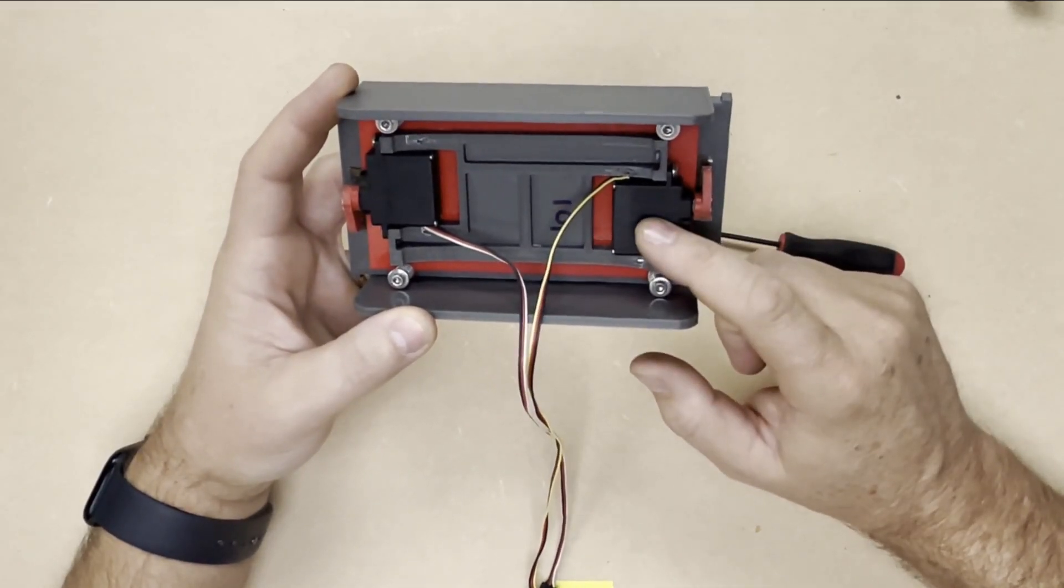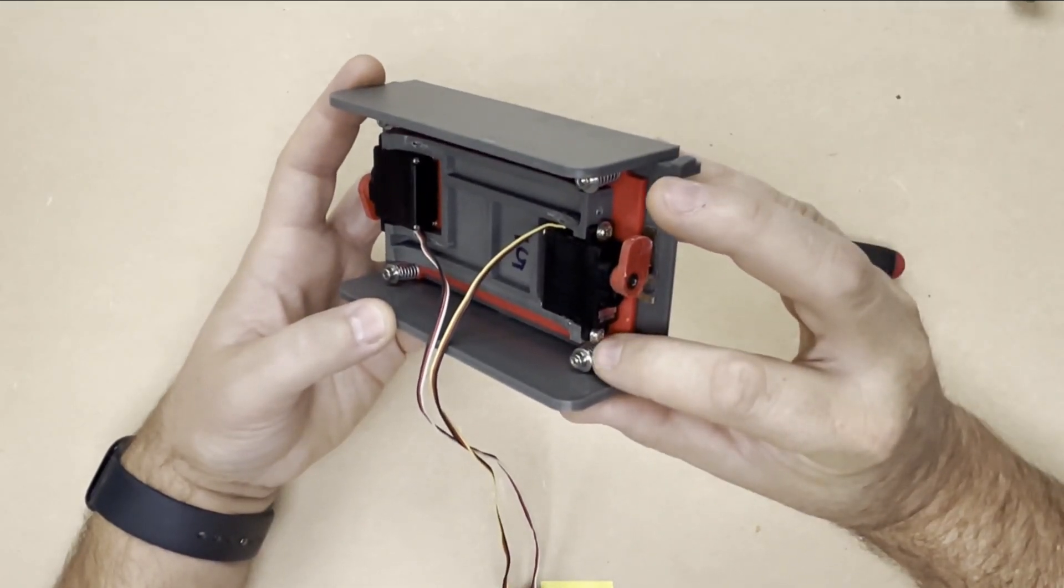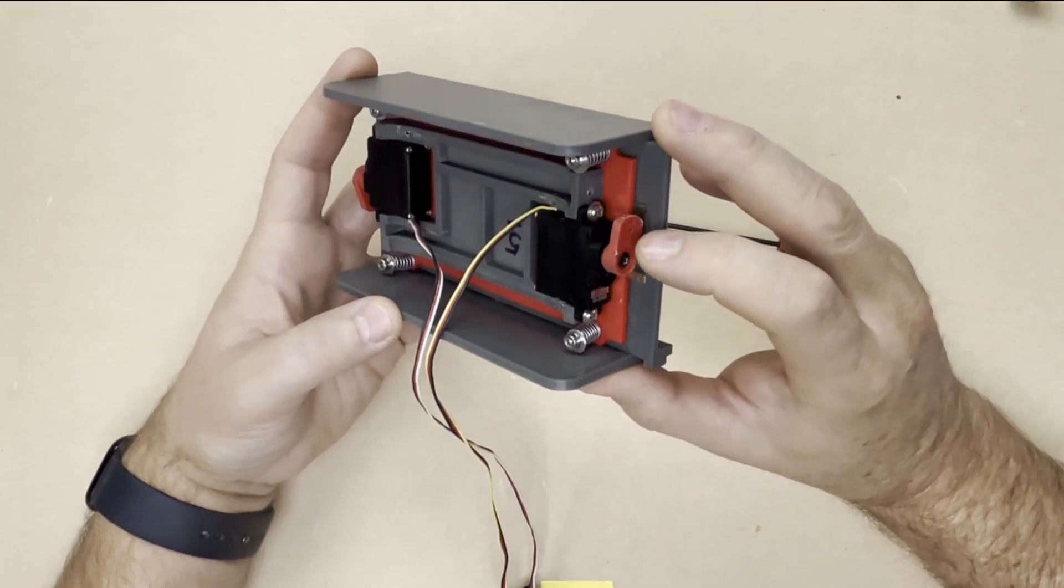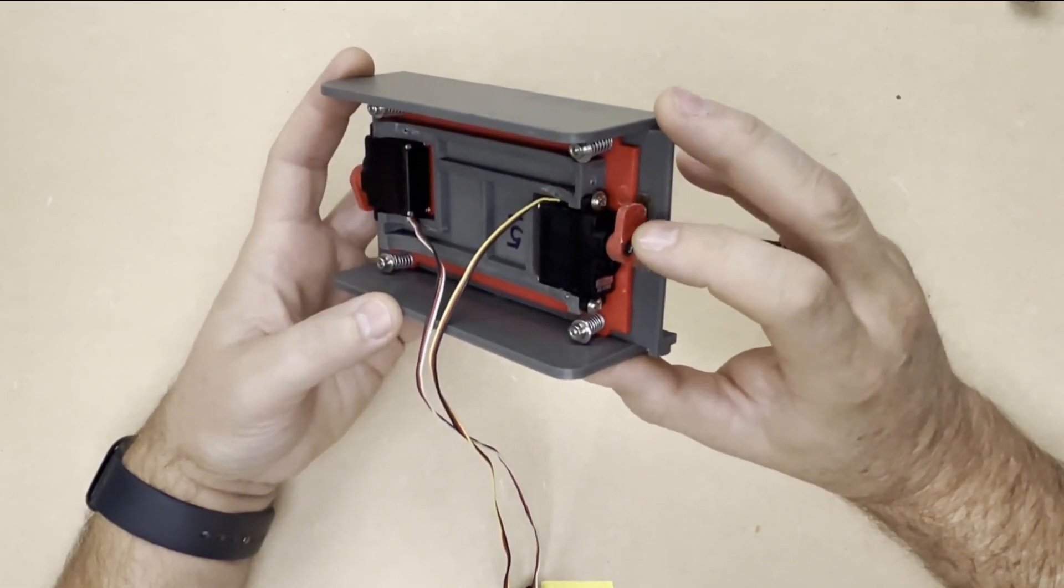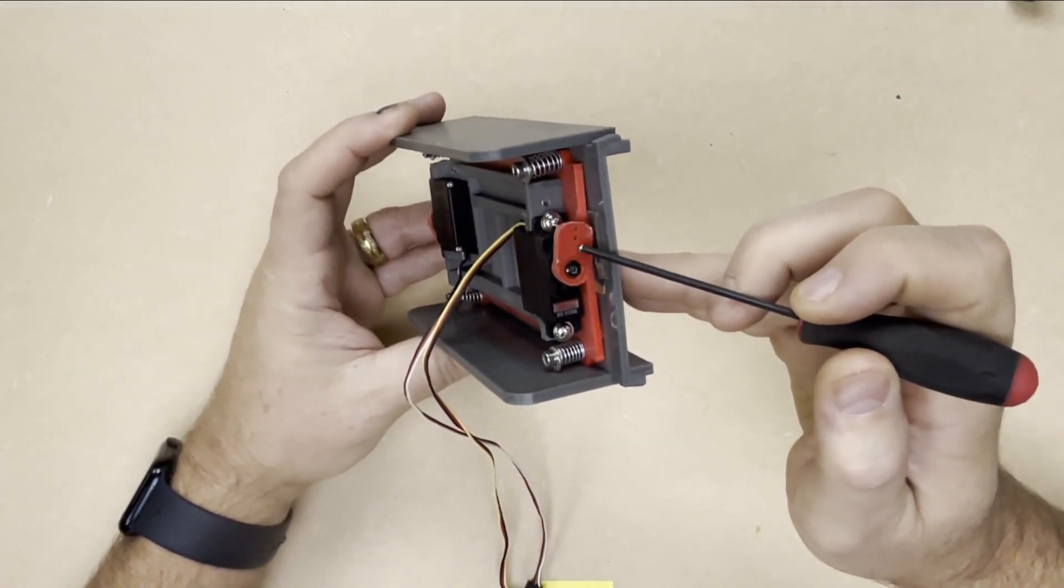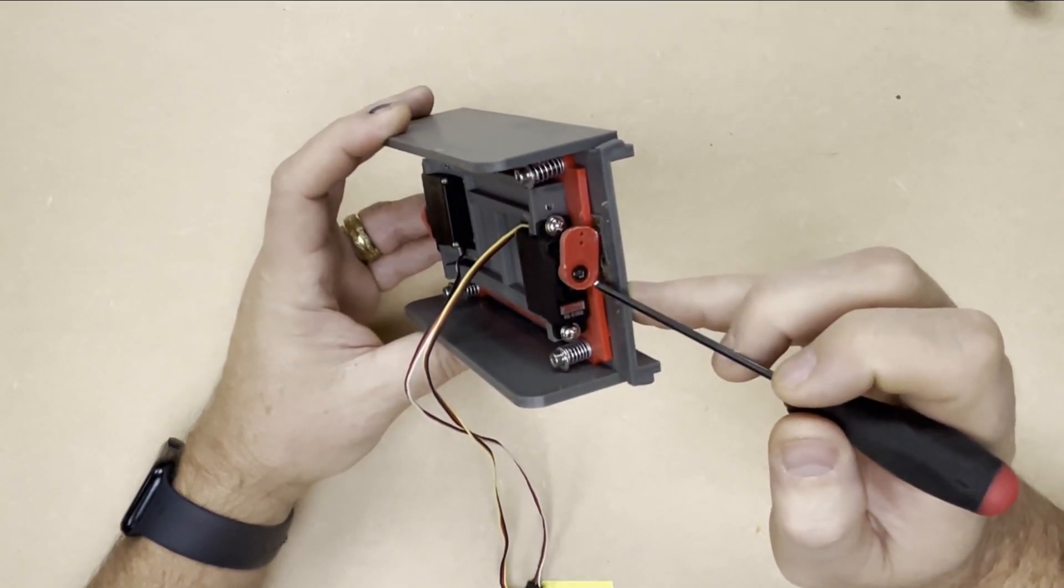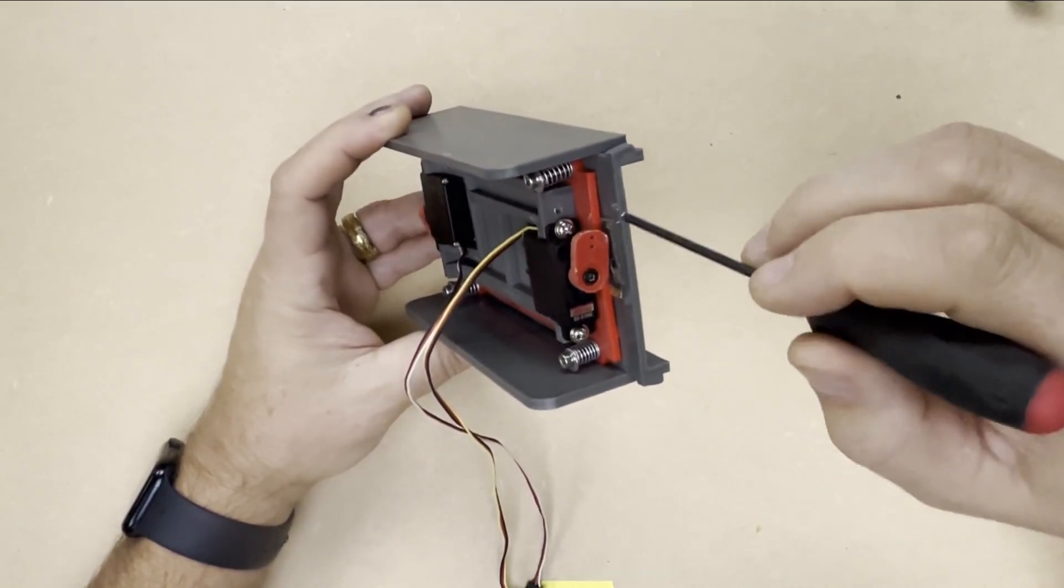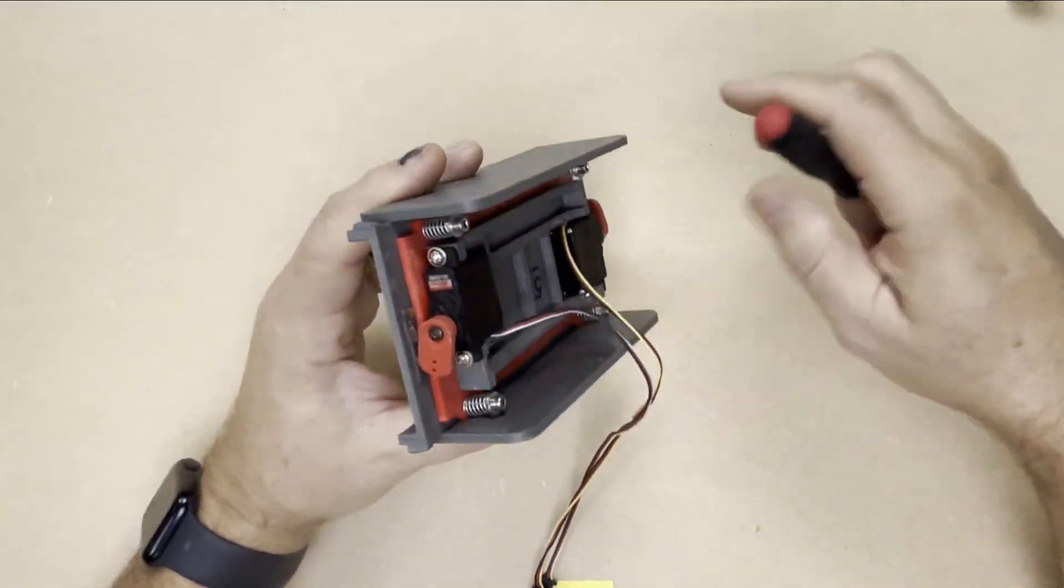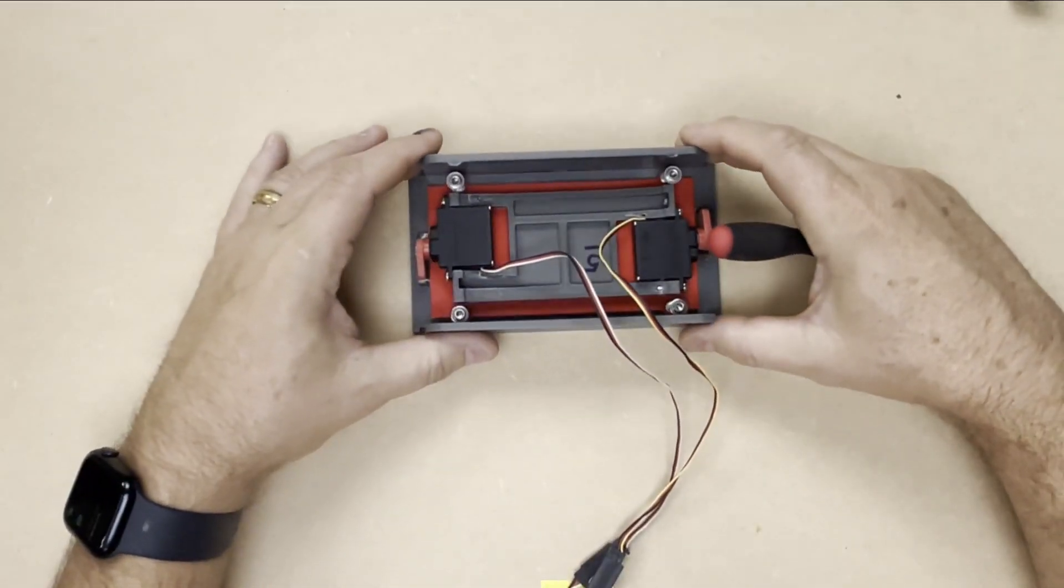So you get the servos. They get installed with servo screws into this gray piece. And then servos come with their own, what's called a servo horn, which is this piece right here. And then I've custom cut it so that it's rounded like this, so that when the servo moves, it travels nicely on this piece of plastic. And then now I'll show you how this all gets put together.